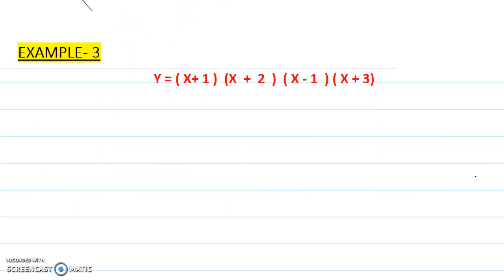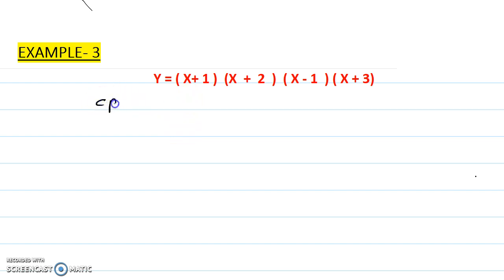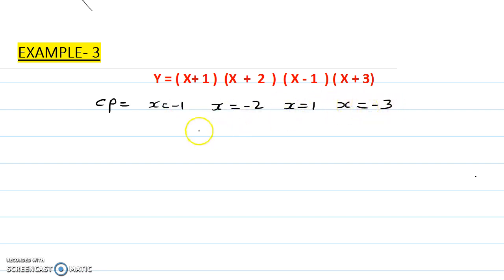Let's go to the next question. There are four critical points here. Just like knowing how to make one cup of coffee means you can make 100 — the method and procedure remain the same. First step: find the critical points (CP). From x+1=0 we get x=-1; from the other factors we get x=-2, x=1, and x=-3.